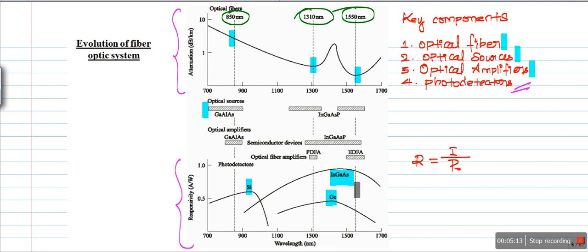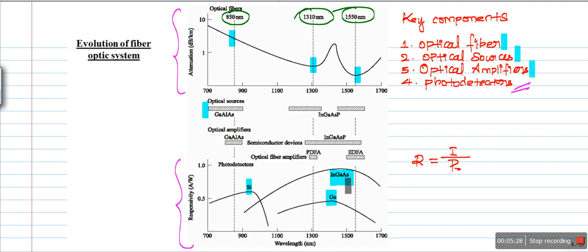That high responsivity is not possible with silicon and germanium materials. The responsivity is very high for 1310 and 1550 nanometers only using indium gallium arsenide material, so we should always prefer indium gallium arsenide as the material for photo detectors to convert the incident optical signal into an equivalent electrical signal. Thank you.